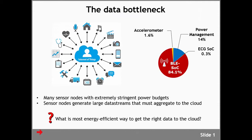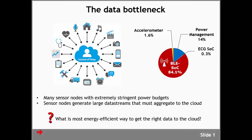In a lot of Internet of Things applications you have a huge amount of sensor nodes which sense the whole world around us. Many of these sensor nodes typically have an extremely stringent power budget while they generate large data streams that must aggregate to the cloud. If you do a power breakdown of these sensor nodes you will find that quite often the power of the radio is a dominating part. So there's a lot of research going on to figure out what the most energy efficient way is to get the right data to the cloud.